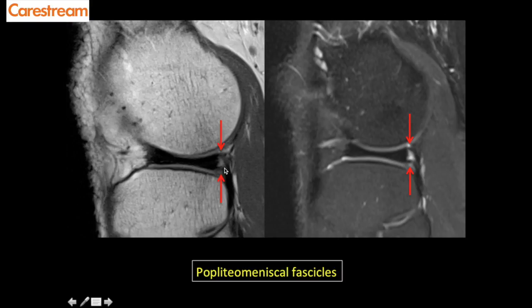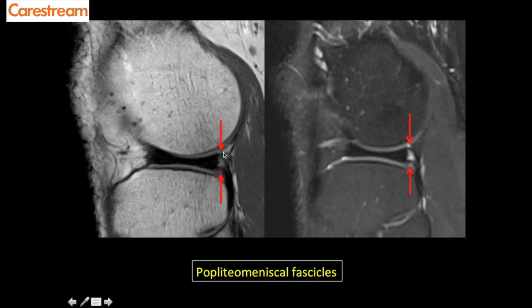The third normal structure that can look like a tear is the popliteal meniscal fascicles. There may appear to be a tear between the periphery of the posterior horn of the lateral meniscus and the capsule, but these are thin linear hypointense bands — approximately three popliteal meniscal fascicles — which connect the posterior horn of the lateral meniscus to the popliteal tendon sheath. Normal fluid signal here should not be mistaken for a tear. Importantly, in cruciate ligament injuries, popliteal meniscal fascicle injury should be identified and reported.